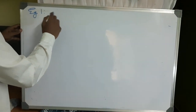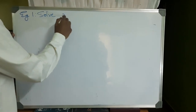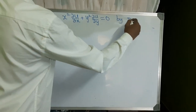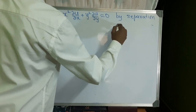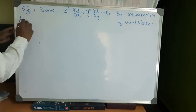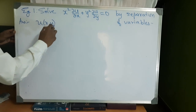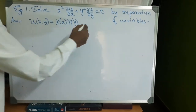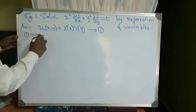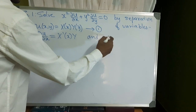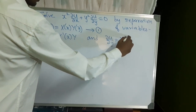Let us consider this example: solve x²(∂u/∂x) + y²(∂u/∂y) = 0 by separation of variables. We assume u(x, y) = X·Y. Now, equation 1 implies ∂u/∂x = X'·Y and ∂u/∂y = X·Y'.